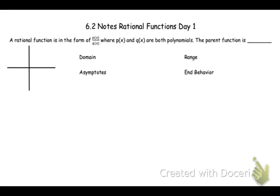Today we are going to look at graphing rational functions. We introduced them briefly last class when we looked at inverse variation. We're going to look at actually drawing the graphs for rational functions. At the beginning of the year, you saw the rational parent function, which was 1 over x. But a rational function is anything where you have one polynomial divided by another polynomial — as long as those two functions are polynomials, it's a rational function.